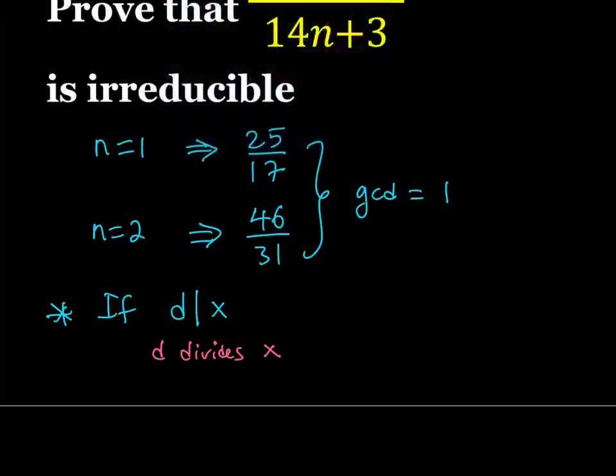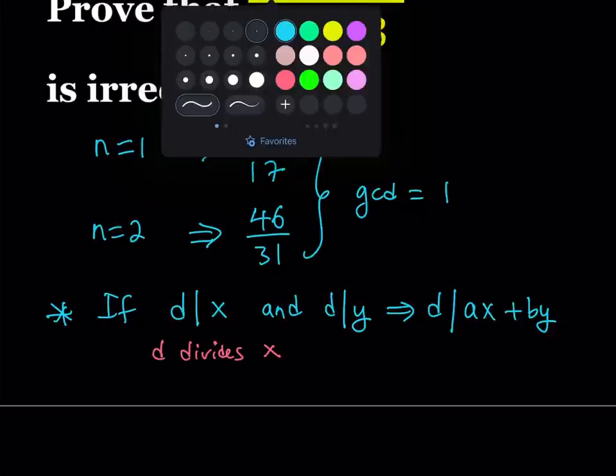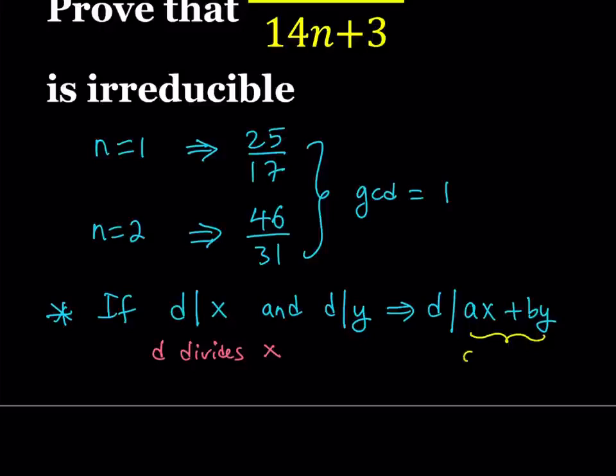Here's how it goes. If d divides x, of course x being an integer in this case, and d divides y, could be the same one or another integer, then we have the following result, which is extremely powerful. d divides ax plus by. So, if d divides x, we multiply x by some integer a, and then we multiply y by another integer b, and we add those together.